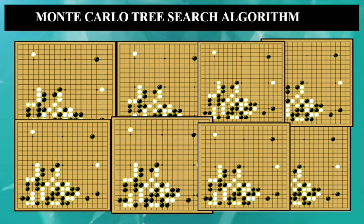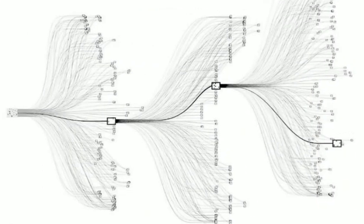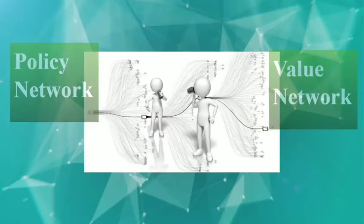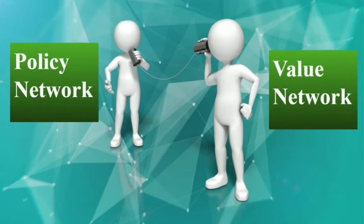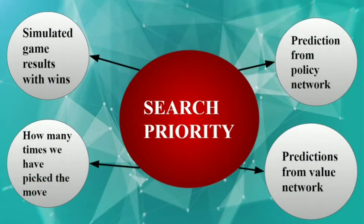By playing a lot of games, we can get an idea of which moves will help us win. Side by side, we build a search tree to record the sequences of moves we are playing. But the number of moves is so many in the game of Go, so we need to prioritize our moves — which is done by getting advice from the Policy and Value Networks. We also make sure to explore and exploit and maintain a trade-off between the two. AlphaGo's search policy can depend on: prediction from Policy Network, prediction from Value Network, simulated game results with wins, and how many times we have picked the move.